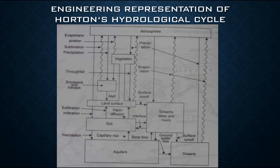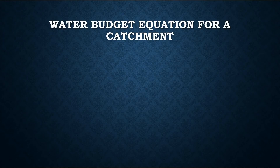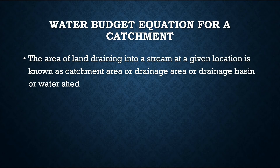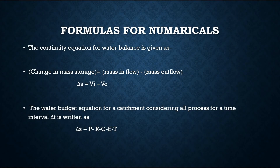The next topic is qualitative and engineering representation. Water budget equation for a catchment: the area of land draining into a stream at a given location is known as catchment area, drainage area, drainage basin, or watershed. The continuity equation for water balance is given as: change in mass storage equals mass inflow minus mass outflow, i.e., ΔS = Vi − Vu.